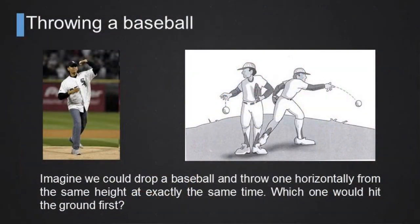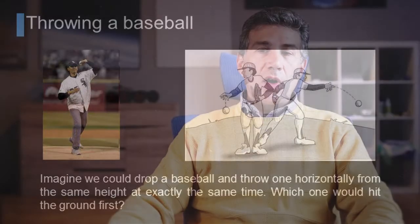Given this, if we throw a baseball and we could drop a baseball from a given height, and we can throw another baseball horizontally from the same height exactly at the same time, which one do you think would hit the ground first? Of course, the right answer is that they will hit the ground at the same time.